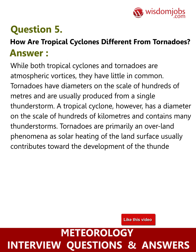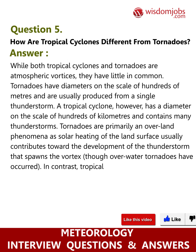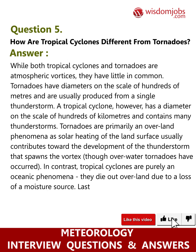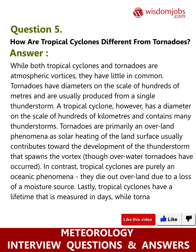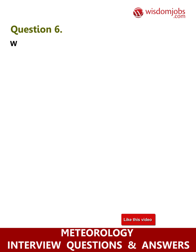Tornadoes are primarily an overland phenomenon, as solar heating of the land surface usually contributes to the development of the thunderstorm that spawns the vortex, though over-water tornadoes have occurred. In contrast, tropical cyclones are purely an oceanic phenomenon — they die out over land due to loss of a moisture source. Lastly, tropical cyclones have a lifetime measured in days, while tornadoes typically last on the scale of minutes.